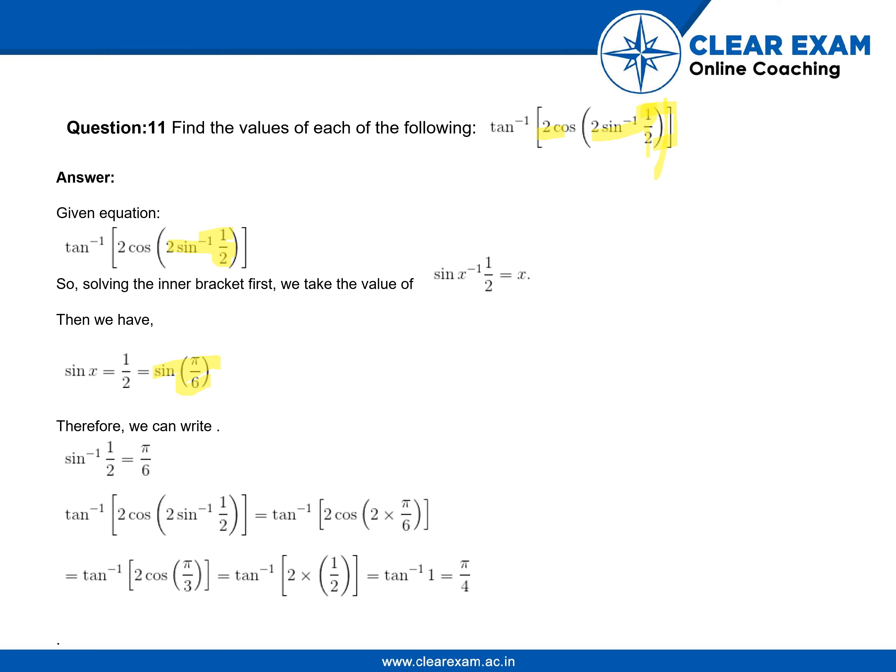Putting this value over here, 2 pi by 6. It will be 1s and 3s. Now it has become 2 cos pi by 3.